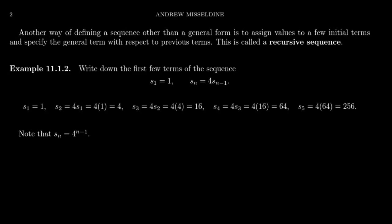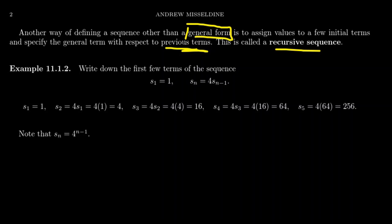A good example of this is the idea of a recursive sequence, which provides another way of defining a sequence that is not based upon the general form. Instead, you can define the sequence by its previous terms. As an example of a recursive sequence, you always have to define a few initial terms.